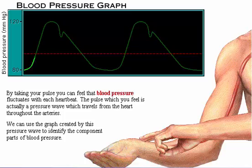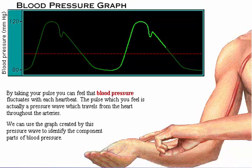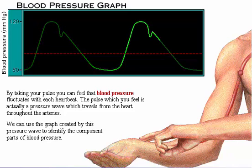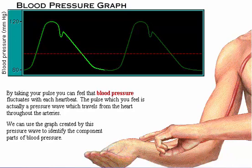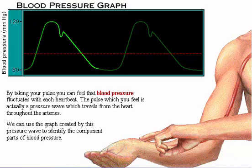By taking your pulse, you can feel that blood pressure fluctuates with each heartbeat. The pulse that you feel is actually a pressure wave which starts from the heart and travels throughout the arteries. We can use the graph created by this pressure wave to identify the component parts of blood pressure.